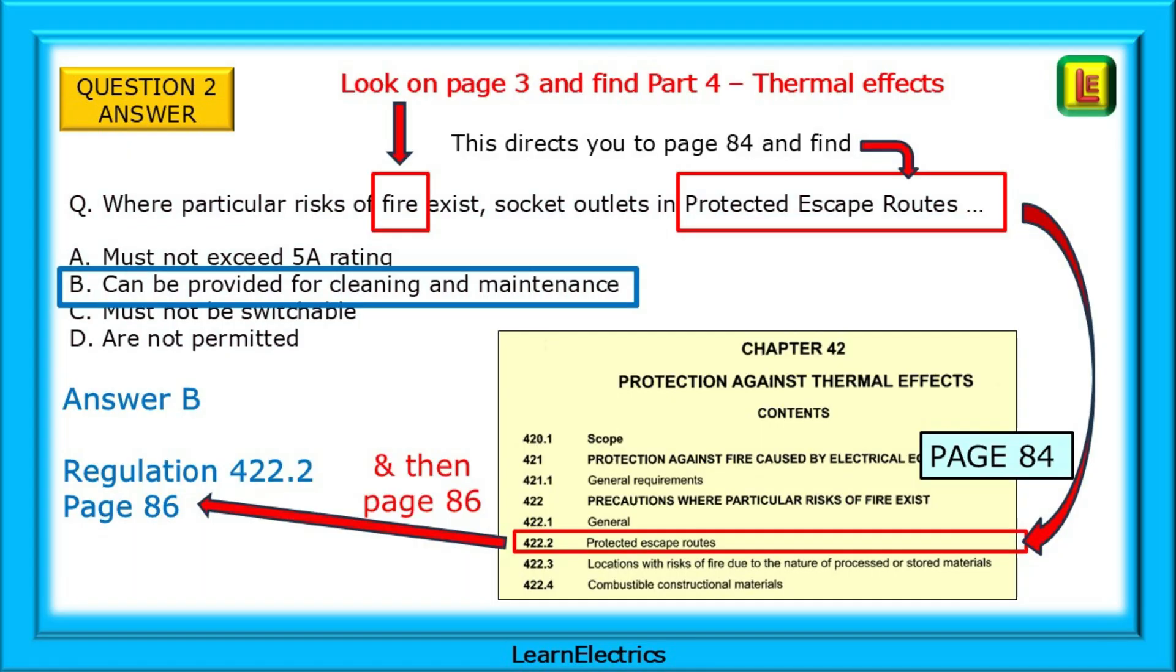The answer is choice B. The key words are fire and protected escape routes. Look on page 3 and in part 4, chapter 42, you will find thermal effects, which surely must have been the same as fire in this context. This directs us to chapter 42 on page 84. A few lines down is protected escape routes, regulation 422.2. Turn to page 86 and you will find the regulation and the answer.